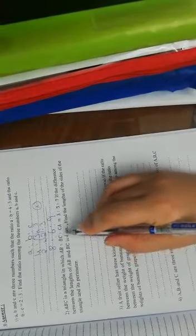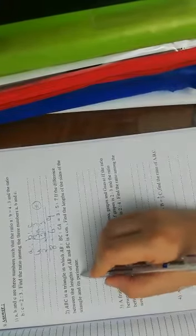Now let us go to number 2. ABC is a triangle in which AB, BC, CA are 3 to 5 to 7. If the difference between the length of AB and BC is 4, find the side length of the triangle and its perimeter.